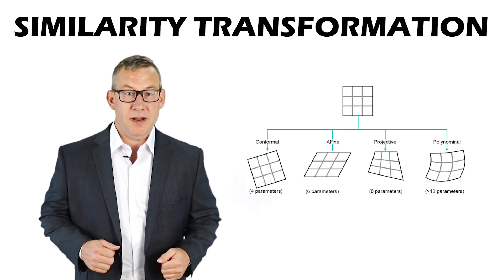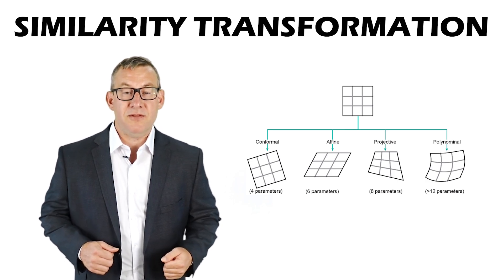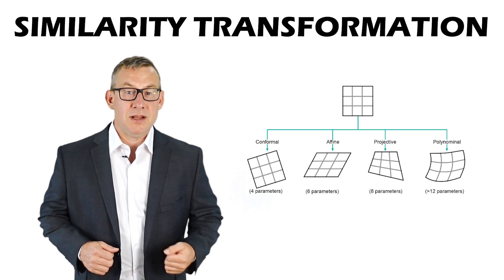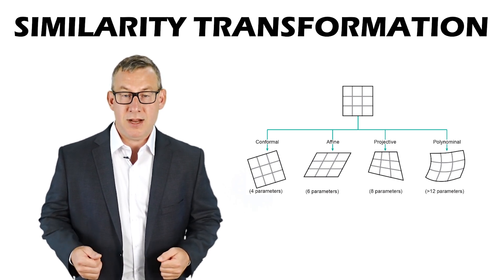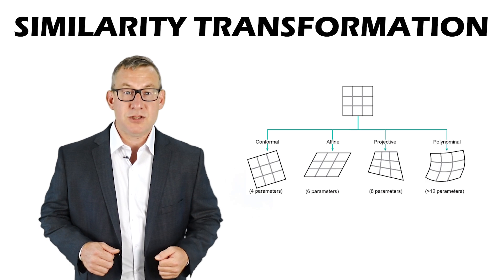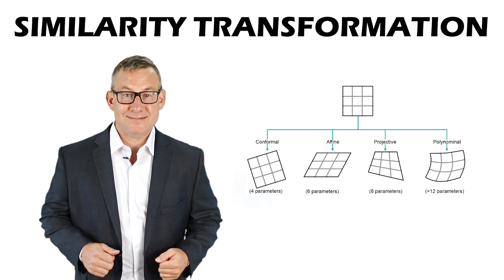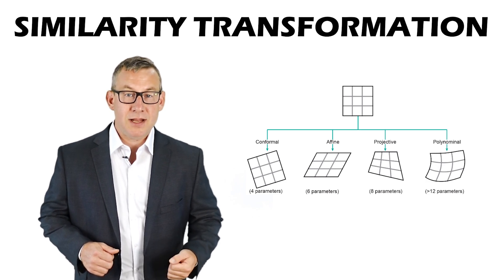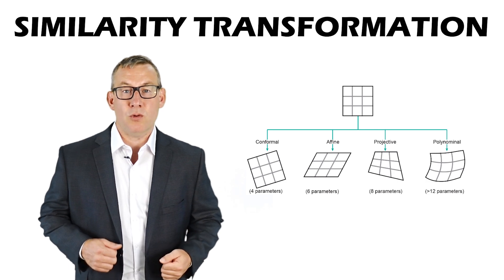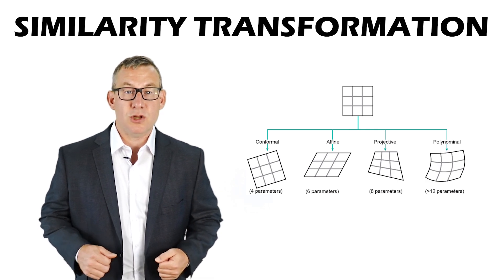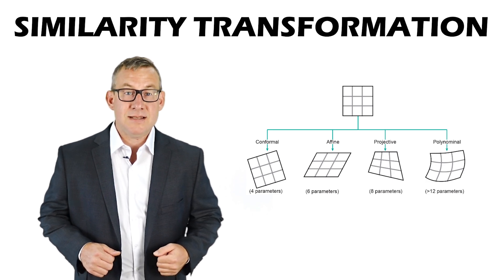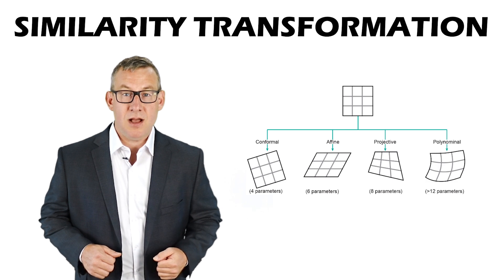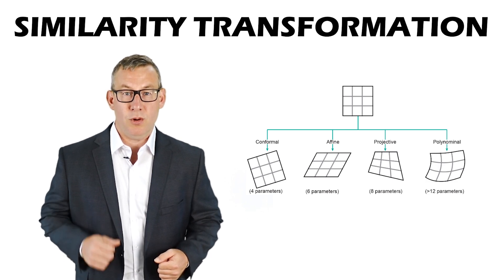A similarity transformation is a subtype of affine transformation. Similarity transformations can scale, rotate, and translate, but they do not skew. They keep the original aspect ratio so shapes don't change, and can be done with just two control points.